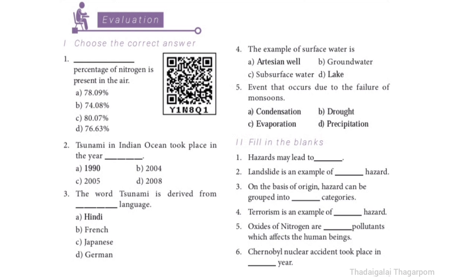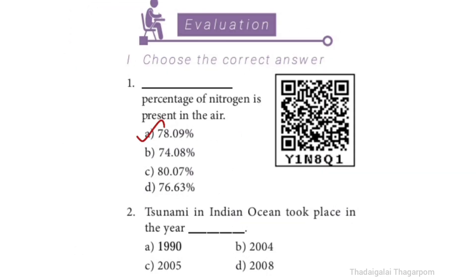First question: What percentage of nitrogen is present in the air? The answer is option A: 78.09%. 78.09% of nitrogen is present in the air.